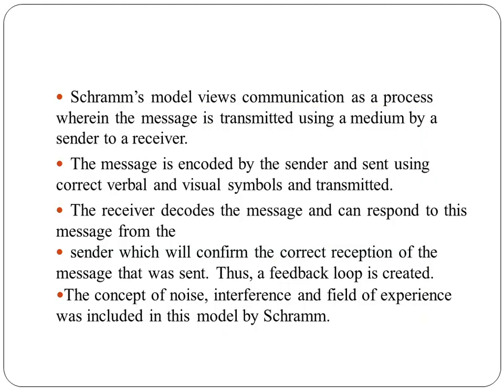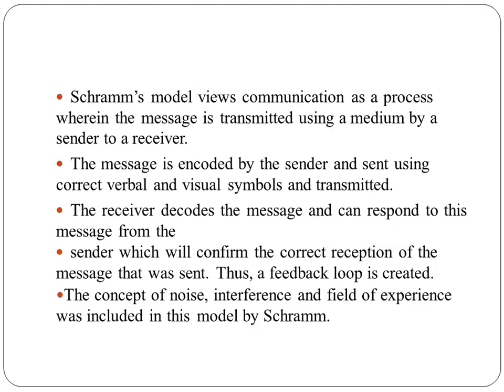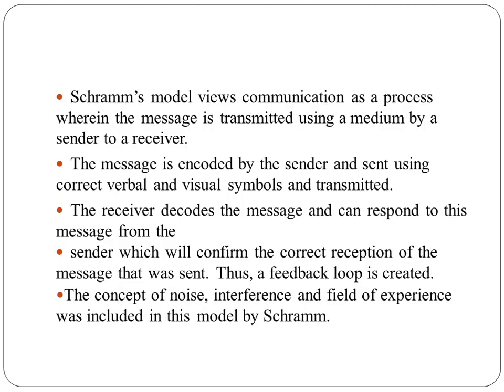Schramm's model views communication as a process wherein the message is transmitted using a medium by a sender to a receiver. The message is encoded by the sender using correct verbal and visual symbols and then transmitted. The receiver decodes the message and can respond, confirming correct reception, thus creating a feedback loop. The concept of noise, interference, and field of experience was included in this model by Schramm. The key point is that the field of experience of sender and receiver should match for the communication to be fruitful and successful.